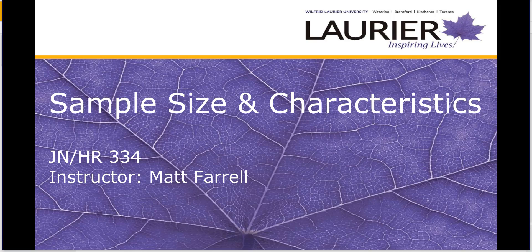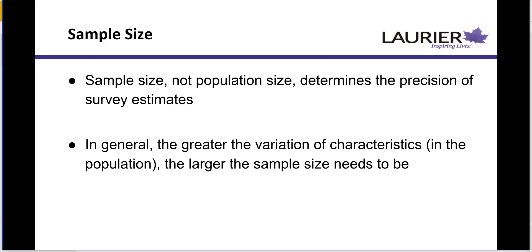In this video, we're going to look at managing sample size and characteristics. When we're talking about sample size, it is the size of the sample we draw from our population — that's where we get our estimates of error, our precision, and our margin of error. It doesn't matter what the population size is or how many people are in the population. It's the sample size that matters. That's what gives us our accuracy as to how representative we can be in the conclusions we make.